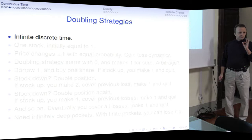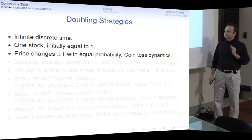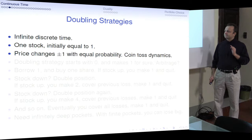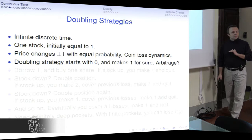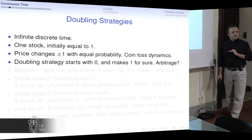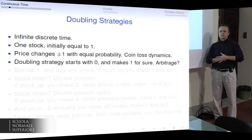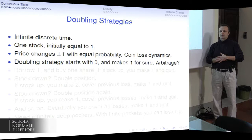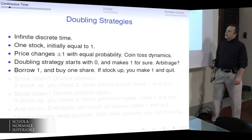Let's start with the doubling strategies problem. Suppose we have infinite discrete time — the simplest setting — and we have one stock with a price initially equal to one. Suppose this is just a simple random walk: at each time increment the price can either go up by one or go down by one, and the two movements are equally likely. You start with zero euros and you want to come up with a strategy which makes one euro for sure. If you can do something like this, this is called an arbitrage, because you start with zero investment, you make a sure profit, and therefore any optimal investment problem is not well posed — you can always add this strategy and do even better, assuming you prefer more to less.